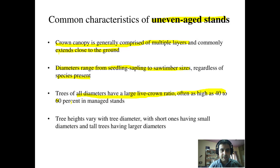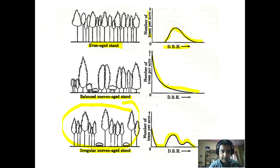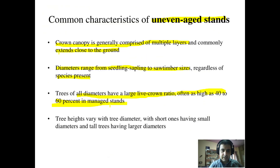Trees of all diameters have a live crown ratio often as high as 40 to 60 percent in managed stands. This is because where larger trees grow, adjacent smaller trees have lower crowns, giving bigger trees ample space to grow. Similarly, smaller trees adjacent to larger trees also get space to develop bigger crowns. Tree heights vary with diameter, with short trees having small diameters and tall trees having large diameters.